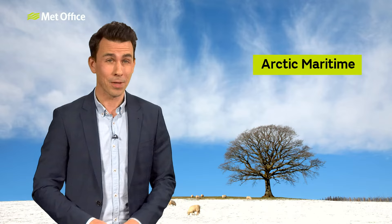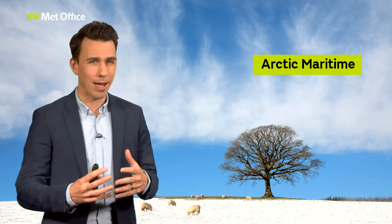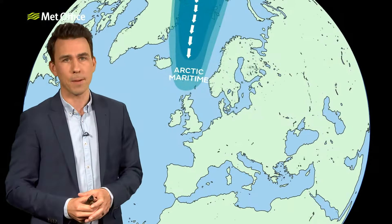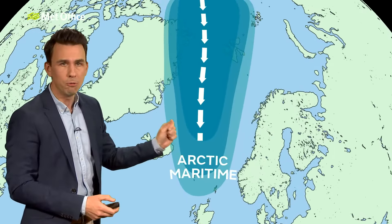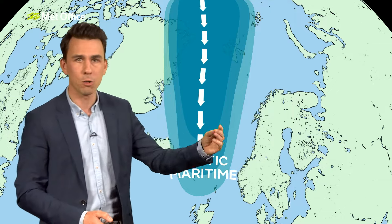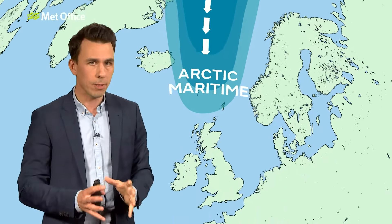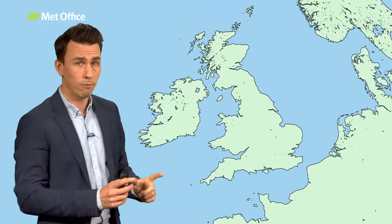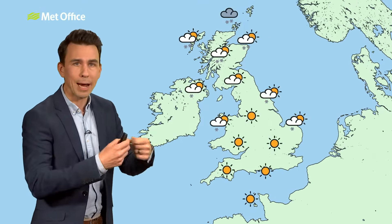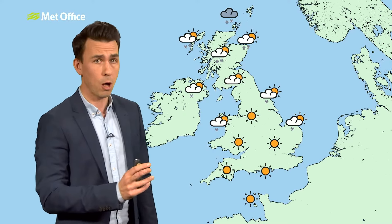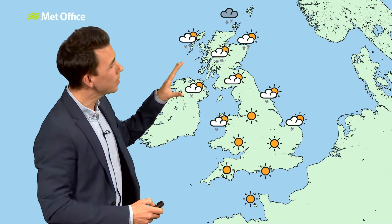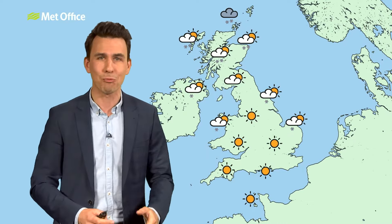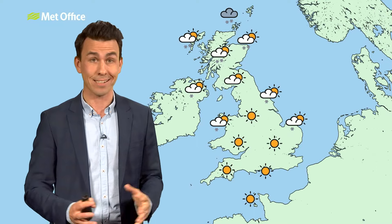Arctic maritime. The Arctic maritime air mass mainly affects the UK during the colder months of the year. Winds directly from the Arctic move south — they start off very cold, and as these northerlies move over relatively milder seas, they pick up moisture and slowly warm from below, causing instability. Shower clouds bubble up, but it's a short enough sea track that the air remains cold, often cold enough for snow, especially near coasts exposed to these northerlies. It's also a very clean air mass. Away from the showers, bright blue skies and sparkling visibility can be expected, although that north wind is cold.